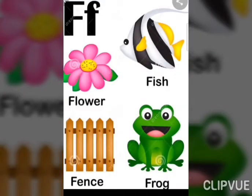F says flower, fish, fence, and frog. Flower, fish, fence, and frog. Okay.